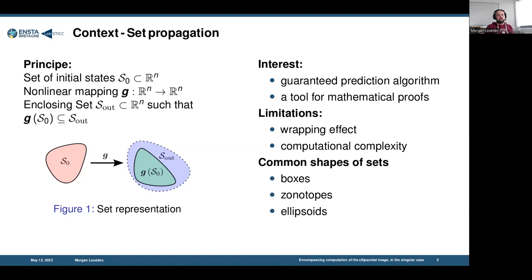There is also the limitation of computational complexity which has to be limited. Usually the algorithms consider specific shapes of sets. The most common are boxes because they have simple mathematics behind. But deeper research has focused on the use of zonotopes and ellipsoids which give better precision with slightly better computational complexity. Today I'm going to focus on ellipsoids.